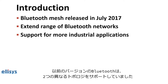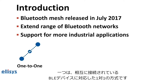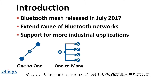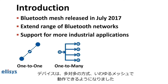Earlier versions of Bluetooth supported two different topologies: one-to-one, specifically when two BLE devices are connected to each other; one-to-many, with BLE devices in the broadcast state such as beacons. With Bluetooth Mesh, a new topology is introduced — devices can now operate in a many-to-many topology, or what's called Mesh.